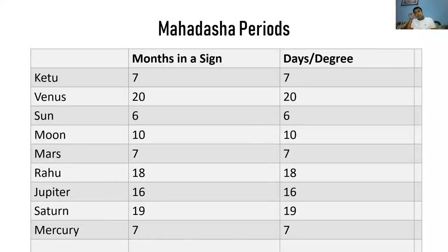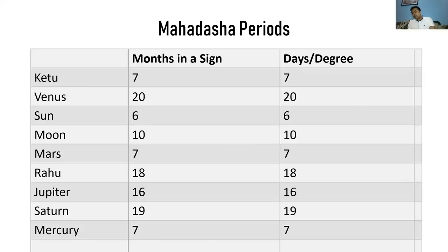Now let's see the Mahadasha periods. Ketu's Mahadasha is seven years; Ketu stays in a sign for seven months. Whatever the Mahadasha period is, that is how long the planet stays in a sign. Venus is 20 years Mahadasha, 20 months in a sign. Six years of Mahadasha means six months in a sign. Days per degree is approximately seven — 7.047 or 20.06 for Venus — but for clarity you can use these as round figures. Mercury's Mahadasha is 17 years, 17 months in a sign, 17 days per degree.